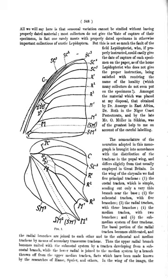Acetylcholine: alternative spelling of acetylcholine. Acrostichal bristles: the two rows of hairs or bristles lying one on either side of the midline of the thorax of a true fly.